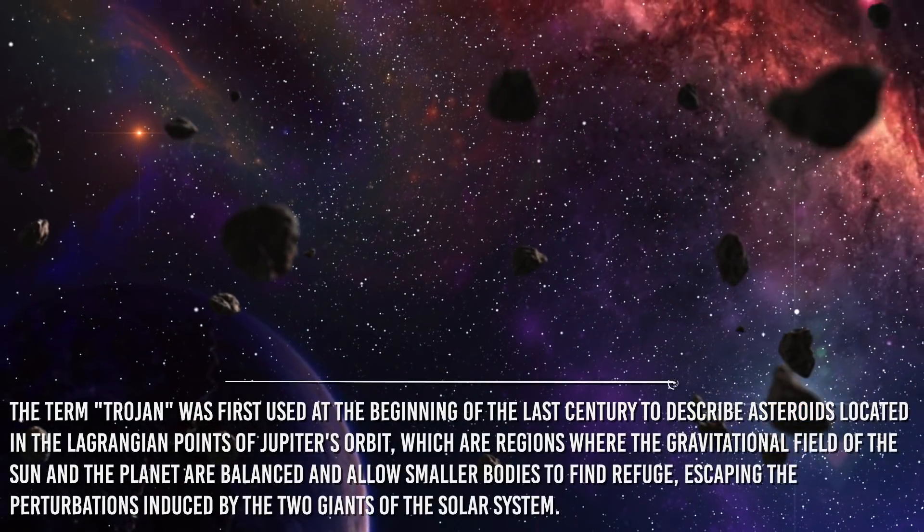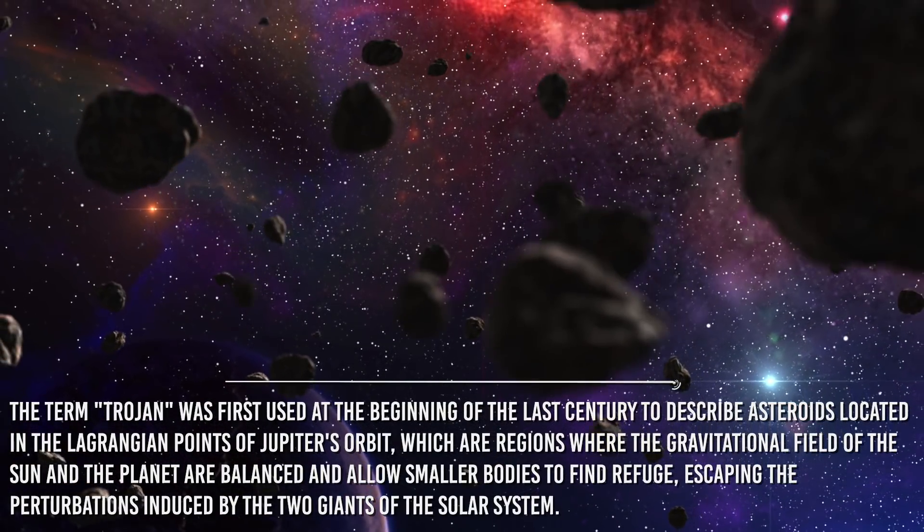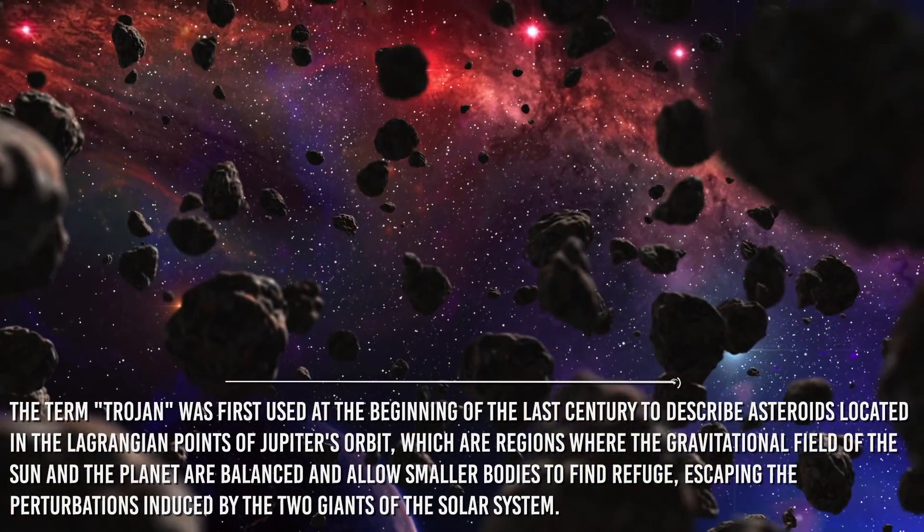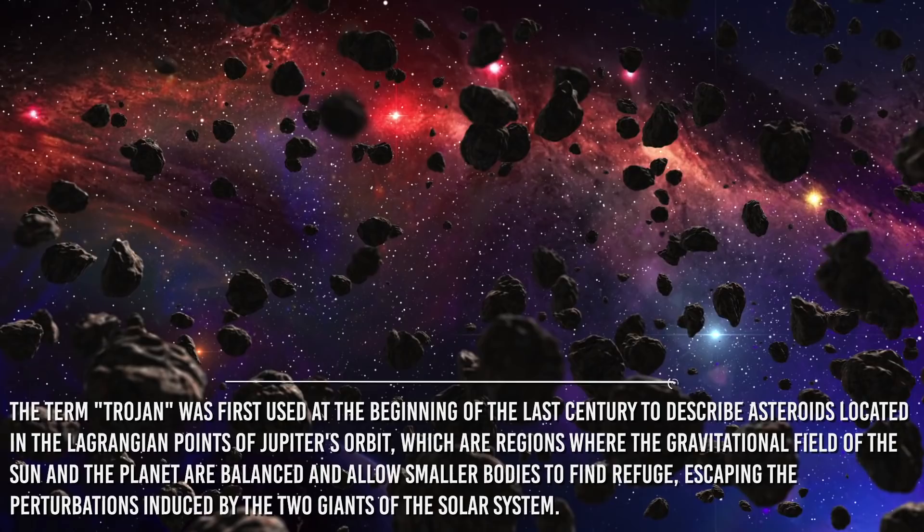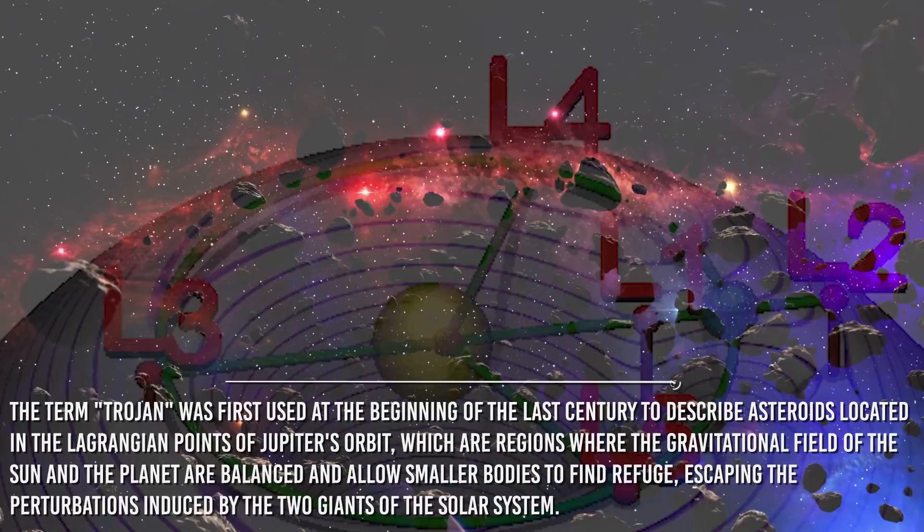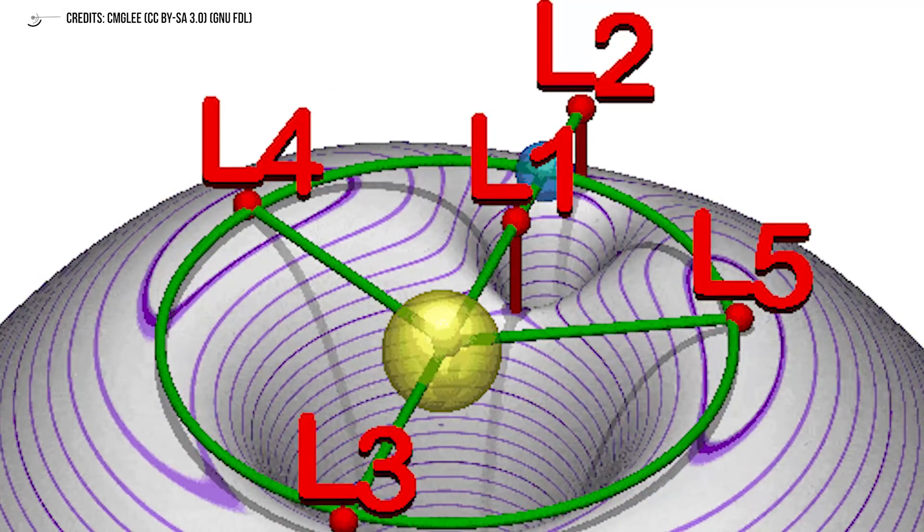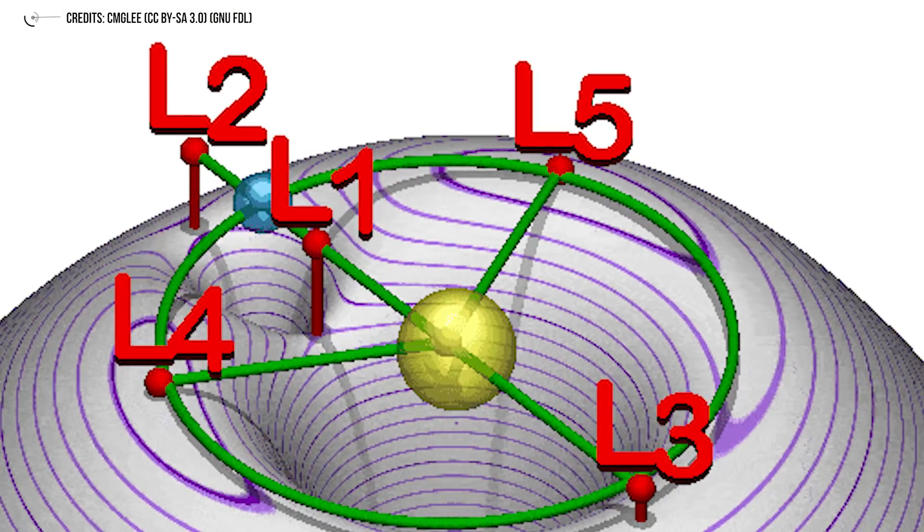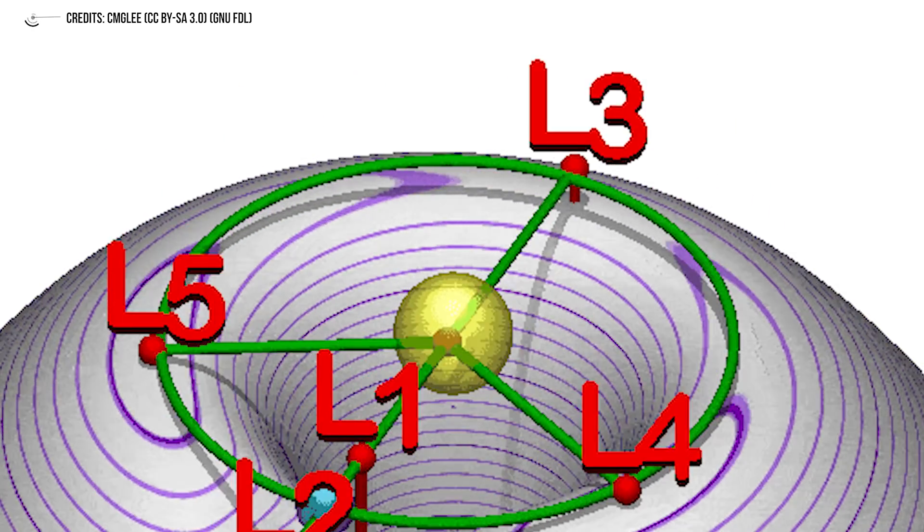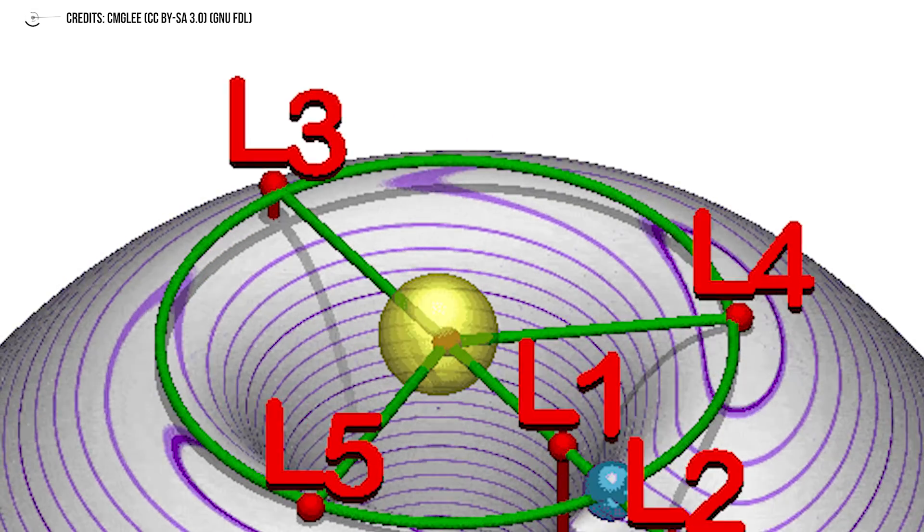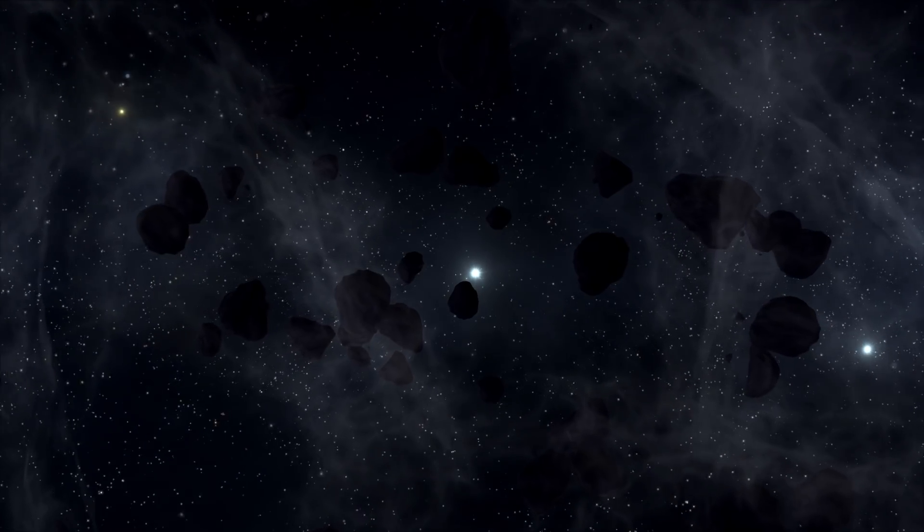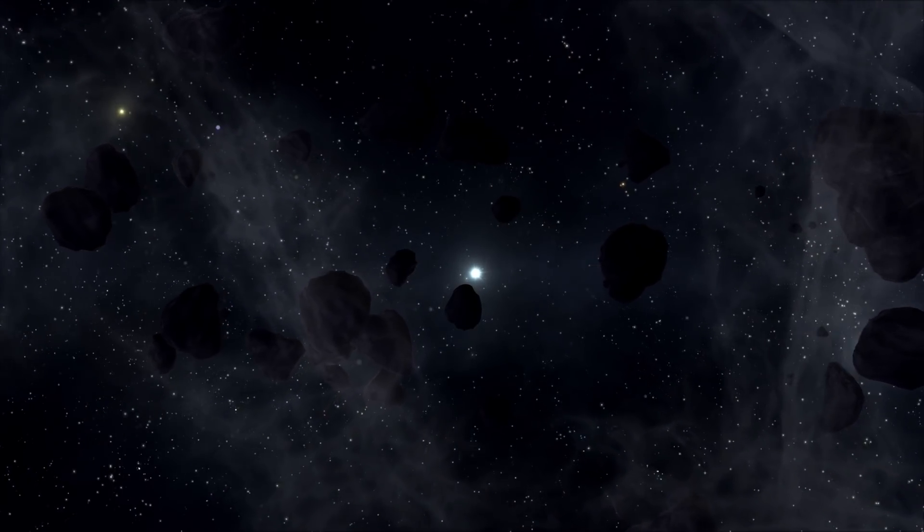The term Trojan was first used at the beginning of the last century to describe asteroids located in the Lagrangian points of Jupiter's orbit, which are regions where the gravitational fields of the Sun and the planet are balanced, and allow smaller bodies to find refuge, escaping the perturbations induced by the two giants of the solar system. There are five of these gravitational oases, but the most important are the so-called L4 and L5, which precede and follow Jupiter by 60 degrees in its orbit around the Sun. But the king of planets does not hold a monopoly on Trojan asteroids. The physical phenomenon that gives rise to the formation of these particular groups of ancient celestial bodies are the same for all planets, even for the Earth.